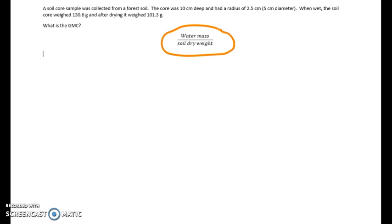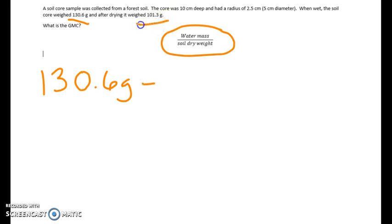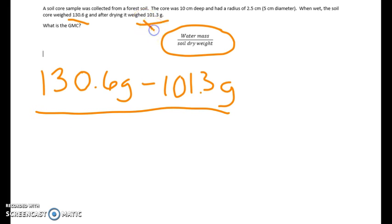First, let's calculate the gravimetric water content of our soil. We use the equation: water mass divided by soil dry weight. To find water mass, we take the wet weight minus the dry weight. So 130.6 grams minus 101.3 grams gives us the water mass. Then we divide by the soil dry weight, which is 101.3 grams.